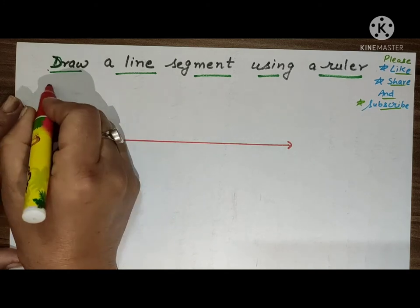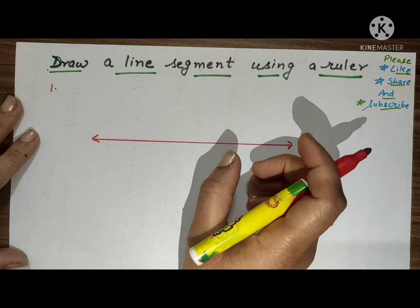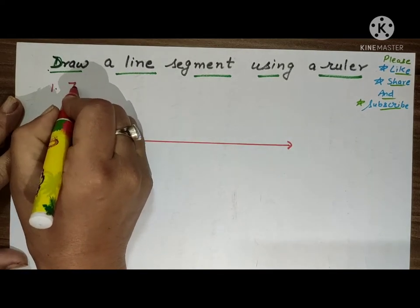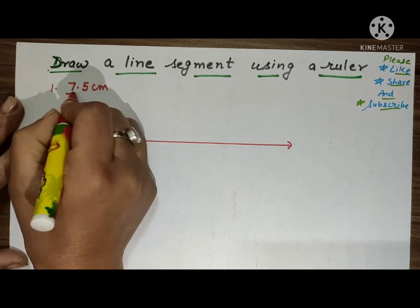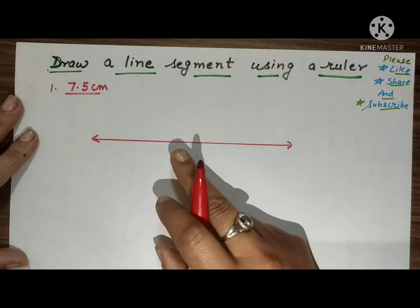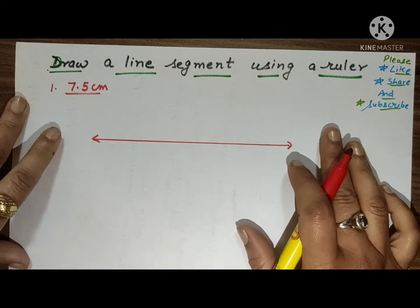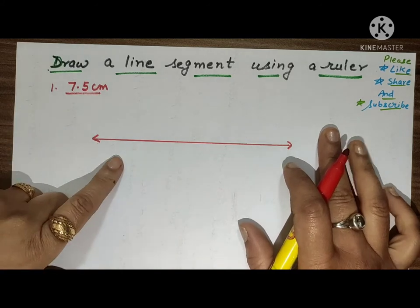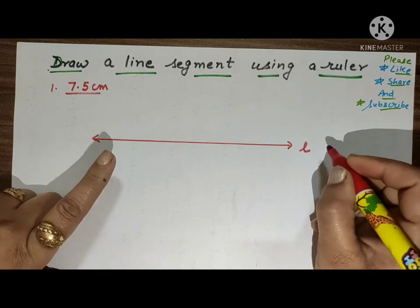We have to draw a line segment of measurement 7.5 centimeters. We have to draw a line segment using a ruler of length 7.5 centimeters.